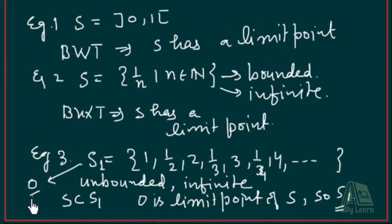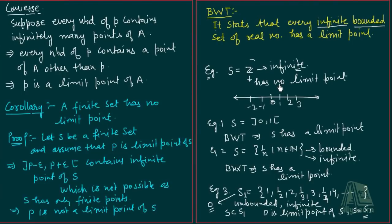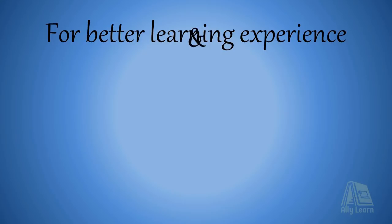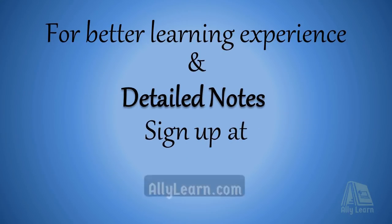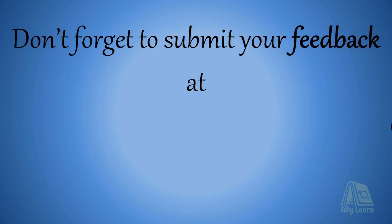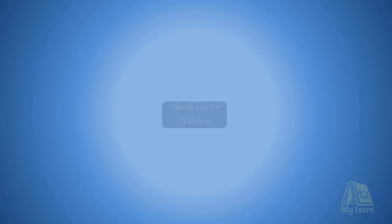So to summarize: if S is a finite set, it has no limit points. If S is infinite and bounded, by Bolzano-Weierstrass theorem it must have a limit point. For experience and detailed notes, sign up at AlleyLine.com. Don't forget to submit your feedback in the comment section of AlleyLine.com. Thank you for watching.